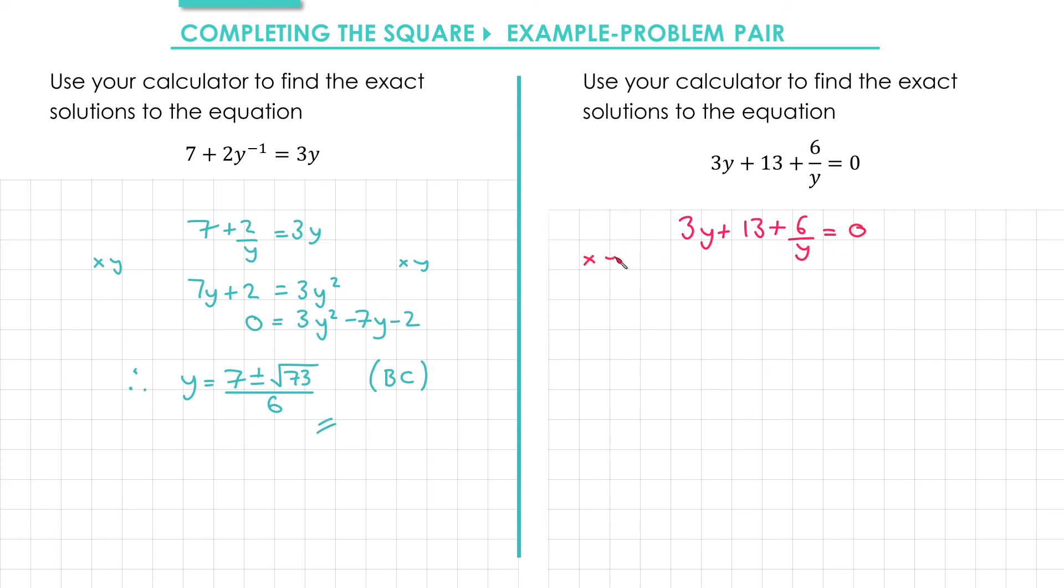First of all I'm going to multiply both sides by y. That gives me 3y squared plus 13y plus 6.